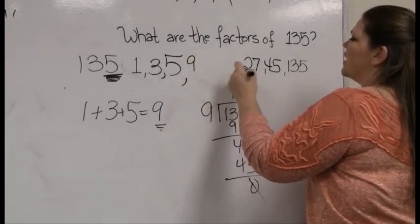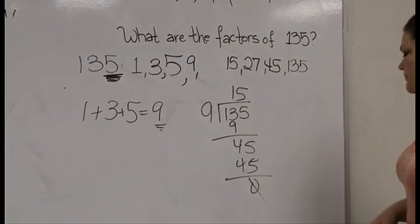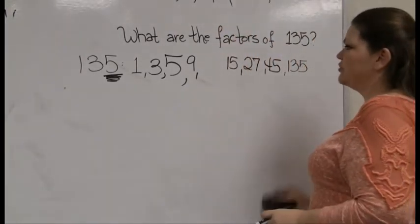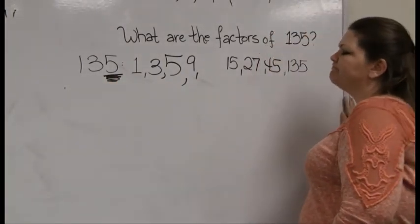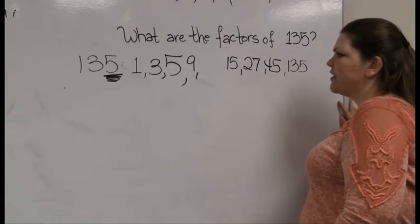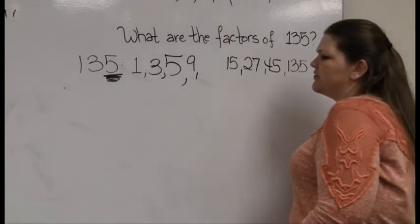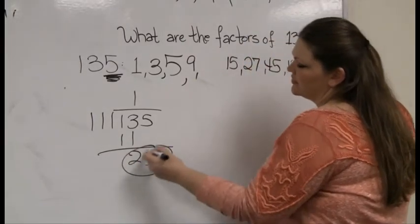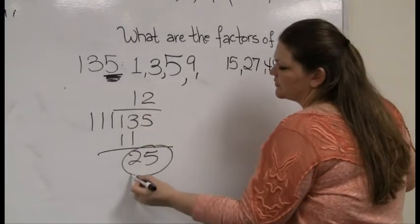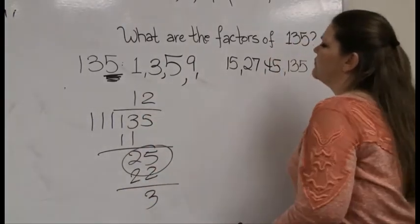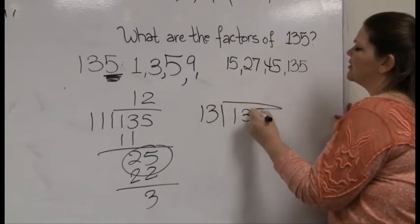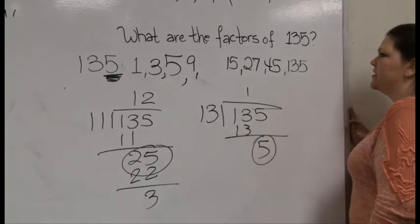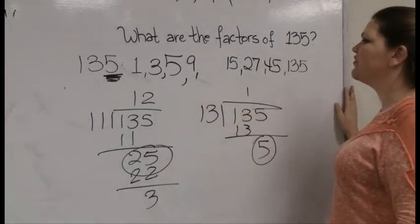135 divides by 9 fifteen times — so 9 and 15 are factors. I only have a couple of odd numbers still to check: 11 and 13. The 11 trick only works for double-digit numbers, and this is triple digits, so I have to use long division. 11 does not go in perfectly — remainder, so no 11. Same thing for 13: it goes into the first two digits perfectly but leaves a remainder of 5. I'm done — these are my factors of 135.